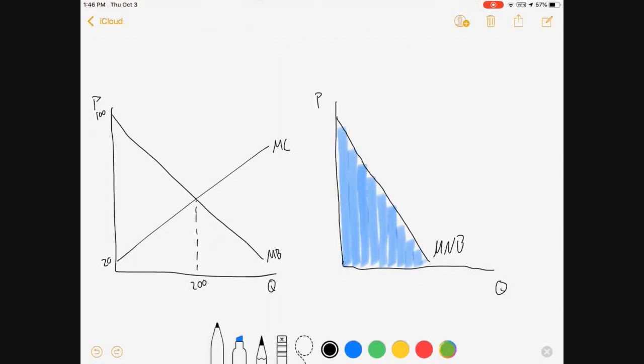So a couple of things to point out. This graph, there's $80 in between the price, the choke prices. Well the marginal net benefits starts at $80. This graph has an equilibrium of $200. Well $200 is the point where marginal benefits equals marginal cost. $200 is also the point where marginal net benefits hits zero.